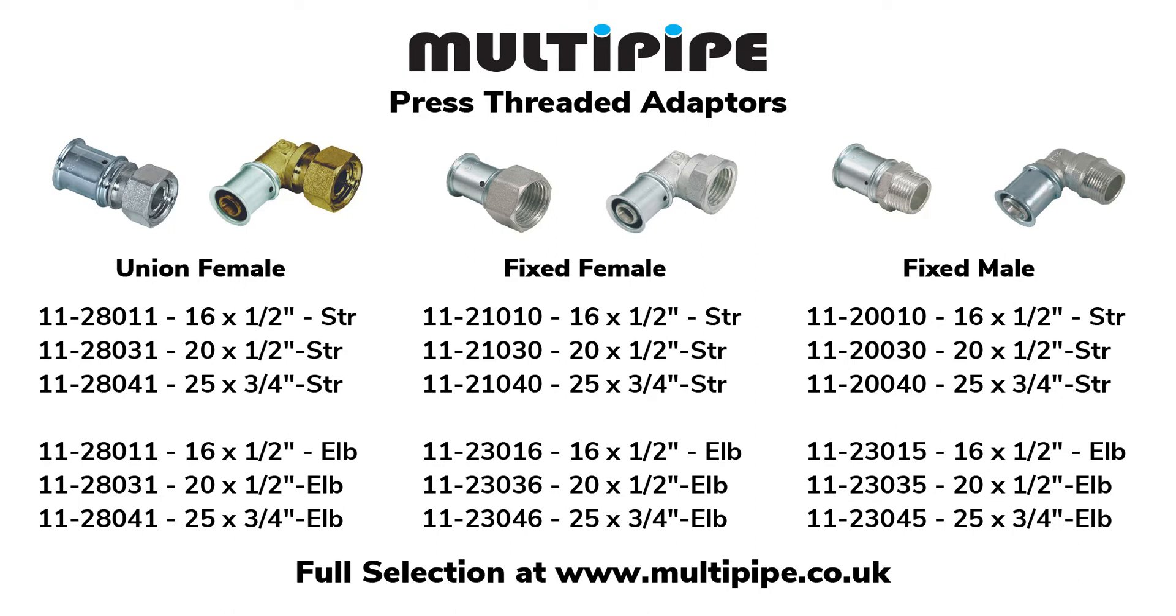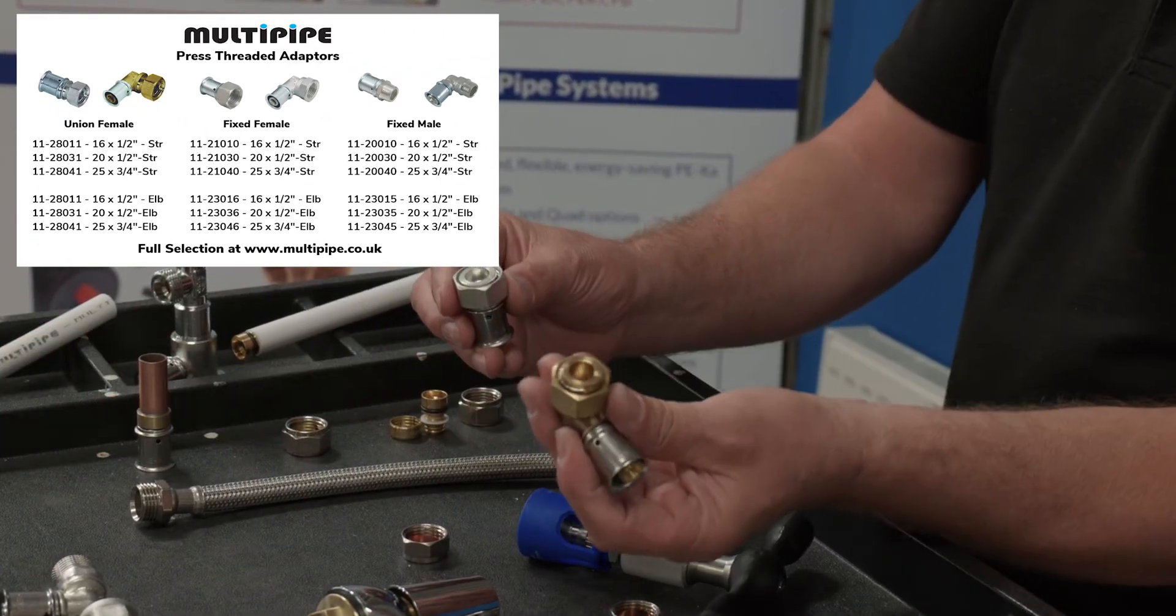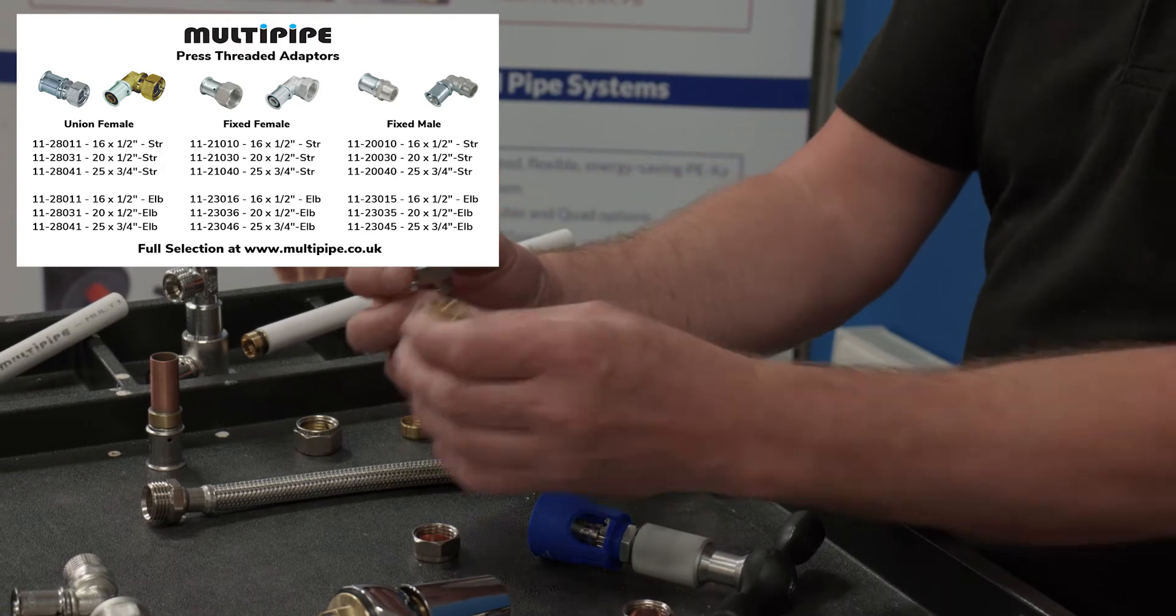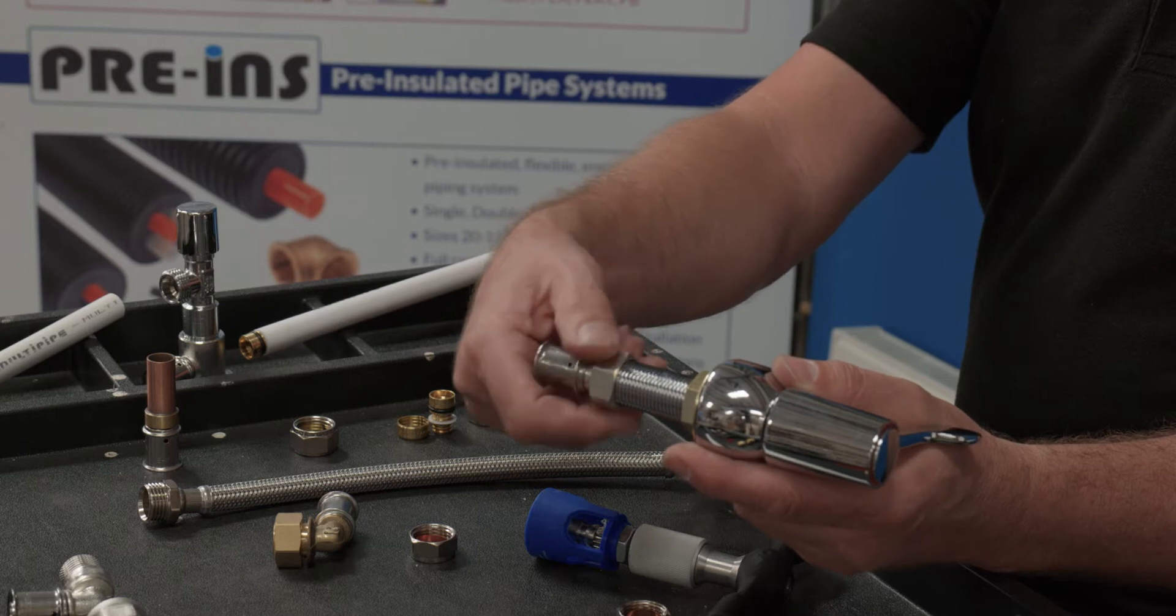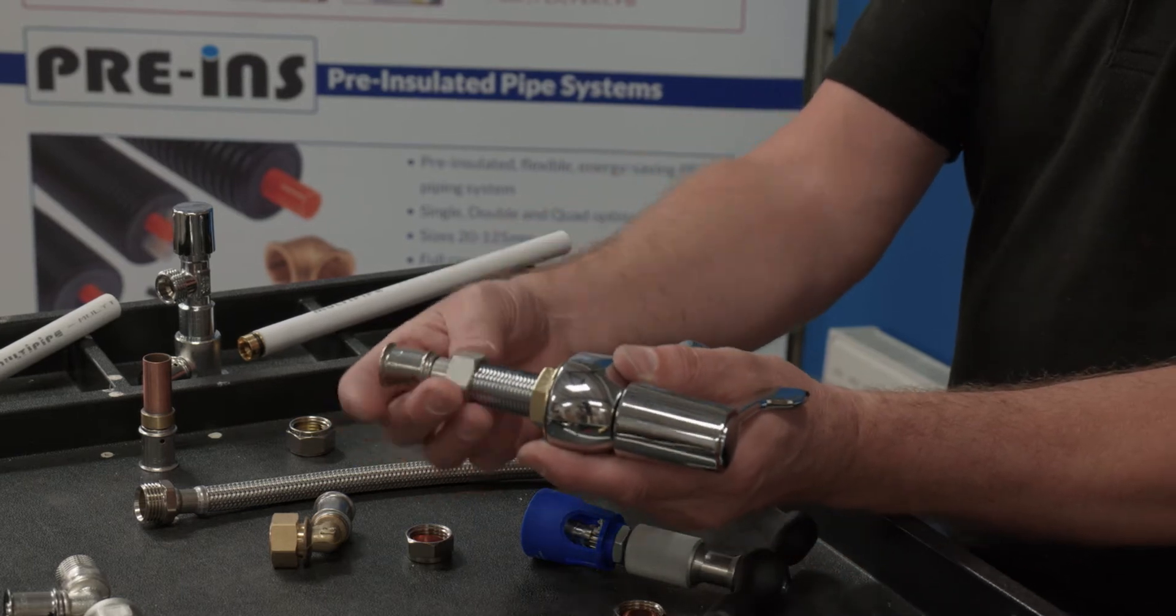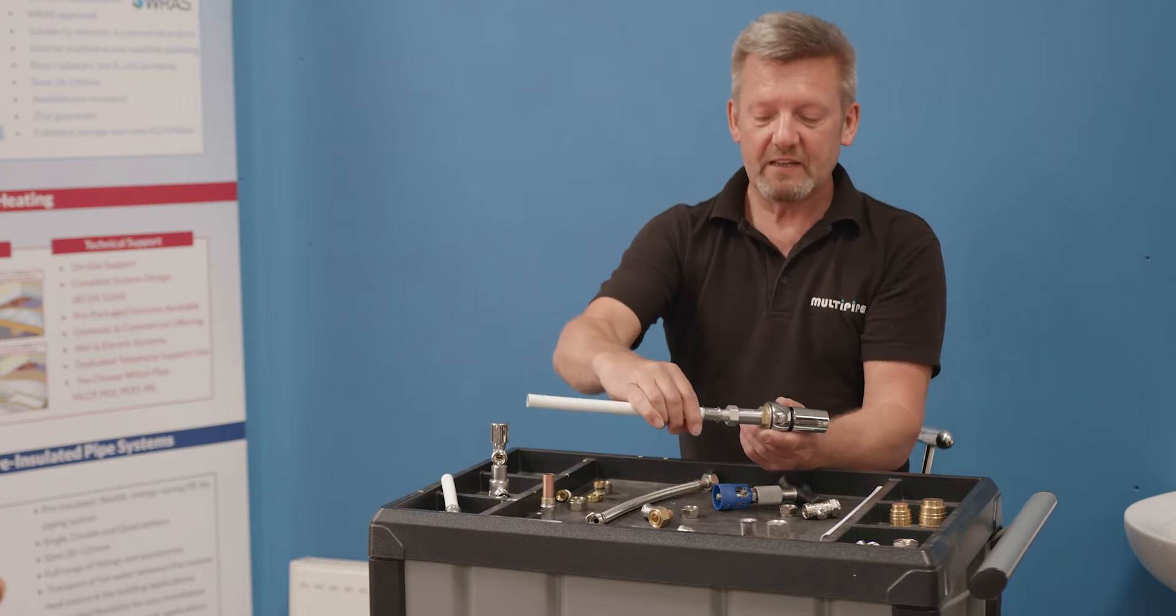Now alternatively, if you didn't want to use this compression adapter, there are some swivel adapters. So these are available in both a bent or a straight version and this will be a flat washer system and this could then take MLC straight onto the bottom of a traditional standard half inch tap and then that particular pipe would just be pressed into place with the normal press gun.